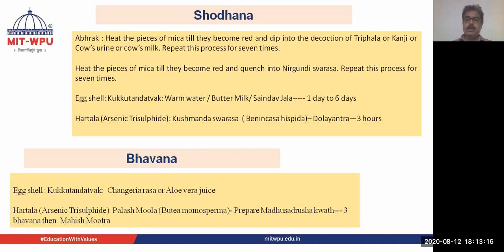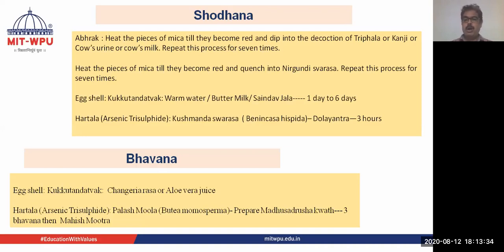Different Ayurvedic books mention different processes for Shodhana or Marana. For making Kukurandatvak Bhasma, which is Bhasma of eggshell, the eggshells are put into warm water, buttermilk, or Sendav Jala (rock salt water). The soaking period can be from one day to six days, and the duration changes depending on which Shodhana medium is used.